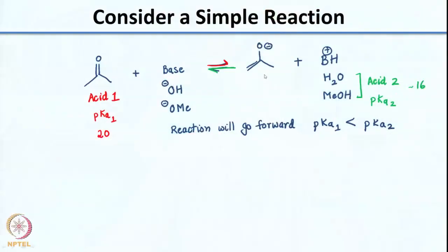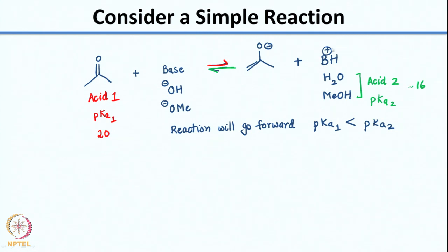Before we go on to catalysis, we need to understand acid-base equilibria. We looked at a simple transformation where acetone in the presence of a base gives an enolate. I asked you to think about what would be a good base. Relative acidities are important because you have 2 acids here: acetone and the conjugate acid of the base, BH+. Both have a tendency to give a proton.